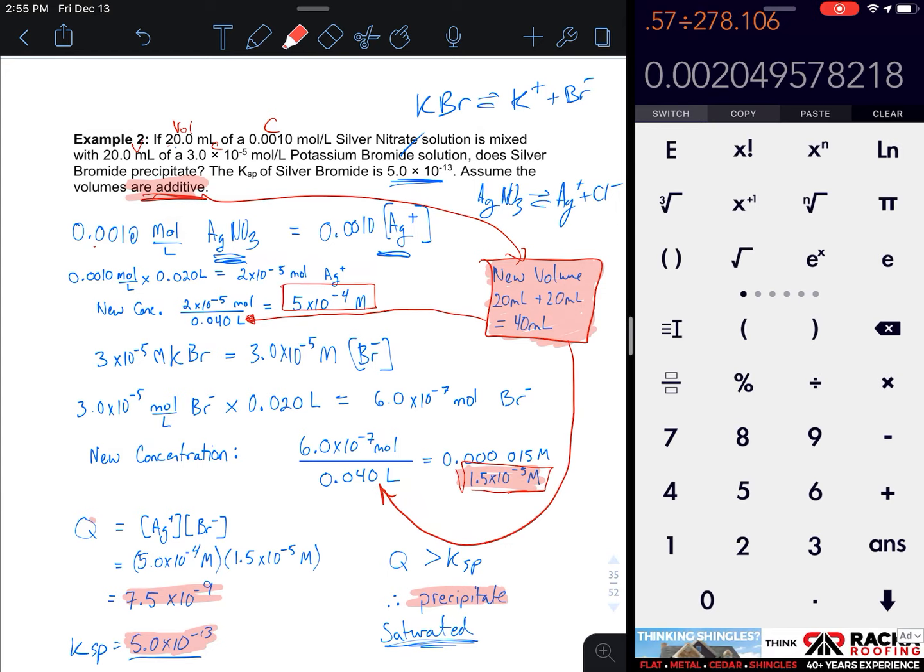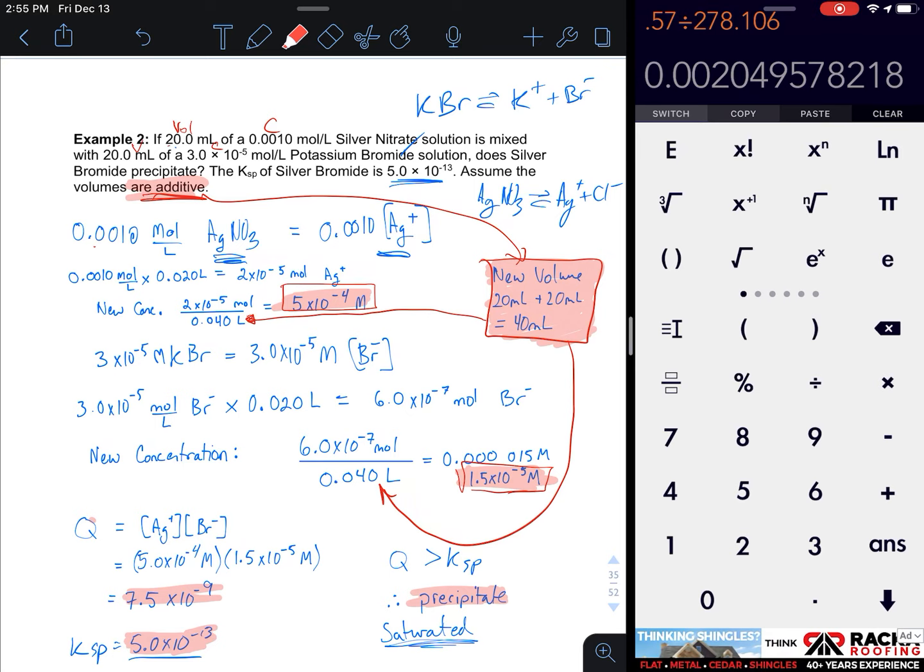I repeat the process with bromine to get my new bromine concentration. Then I make a test Q using my Ksp equation. I multiply those two concentrations and find that it's 10⁻⁹. Compare that to the Ksp of 10⁻¹³. Negative 13 is a lot smaller than negative 9, so Q is larger than Ksp, so it certainly is going to precipitate.